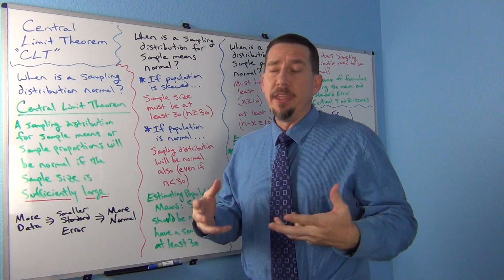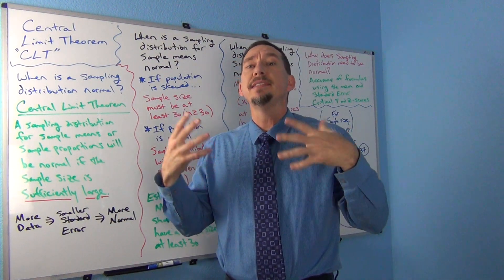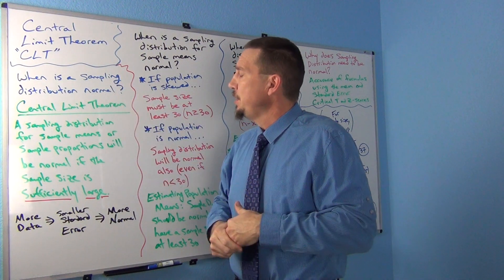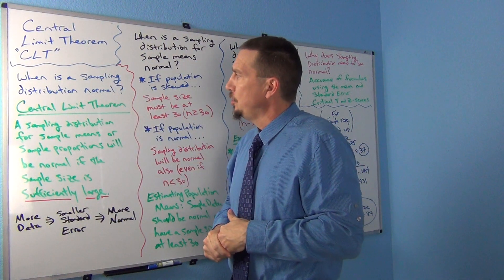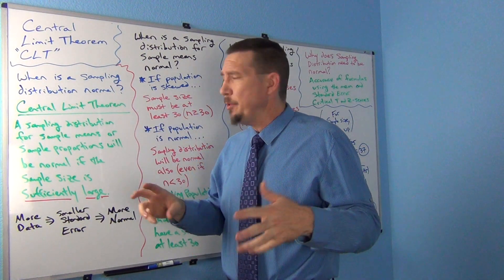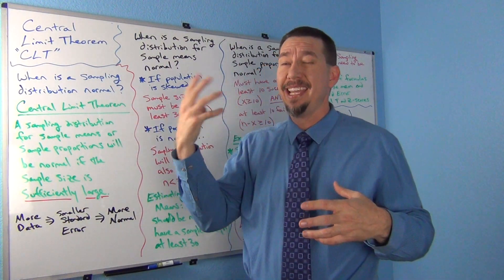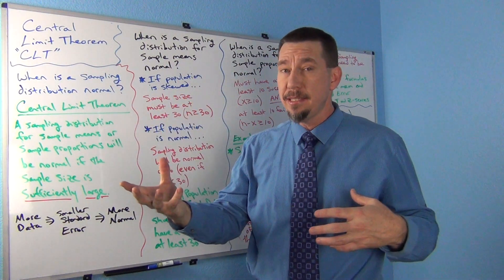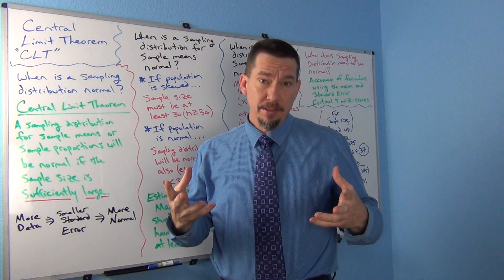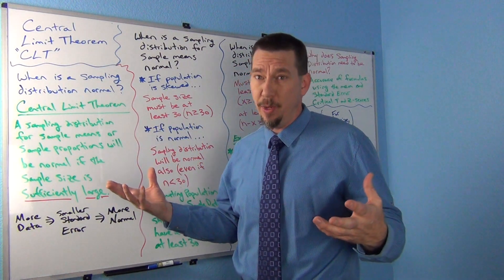The Central Limit Theorem is really a theorem about when is a sampling distribution normal — when is that sampling distribution going to look normal? Traditionally in a stats textbook, the Central Limit Theorem is stated in terms of the sample means, a sampling distribution of sample means. But it actually applies to sample proportions as well.